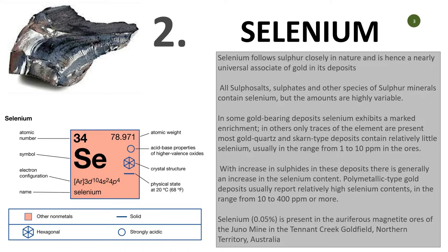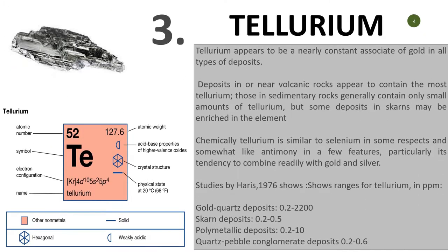Selenium ranges mostly between 10 to 400 ppm. Number three is tellurium. Tellurium appears to be a nearly constant associate of gold in all types of deposits. Chemically, tellurium is similar to selenium in some respects and somewhat like antimony in a few features. It has a tendency to combine with gold and silver. Studies have tested this in skarn deposits, polymetallic deposits, and Witwatersrand conglomerate deposits.